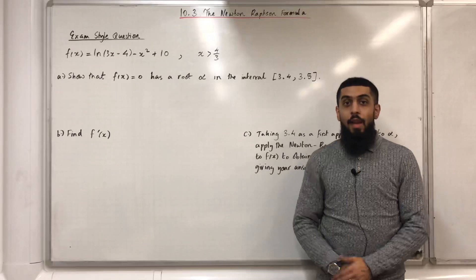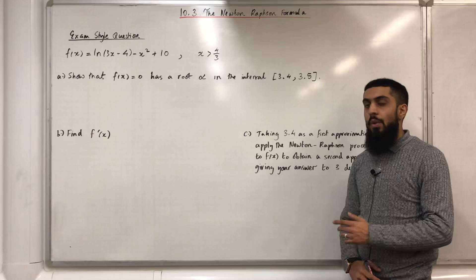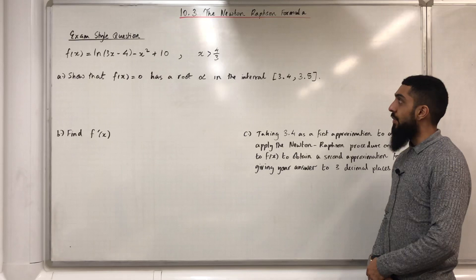Here is an exam-style question. f(x) equals ln(3x - 4) minus x squared plus 10, where x is greater than 4/3. Part A, show that f(x) equals 0 has a root alpha in the interval [3.4, 3.5].